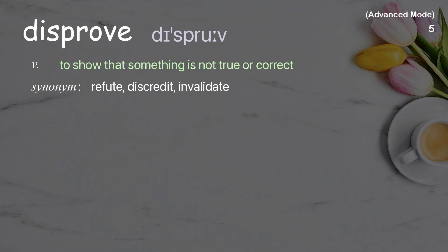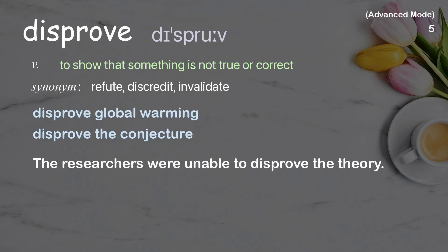Disprove. To show that something is not true or correct. Examples: Disprove global warming. Disprove the conjecture. The researchers were unable to disprove the theory.